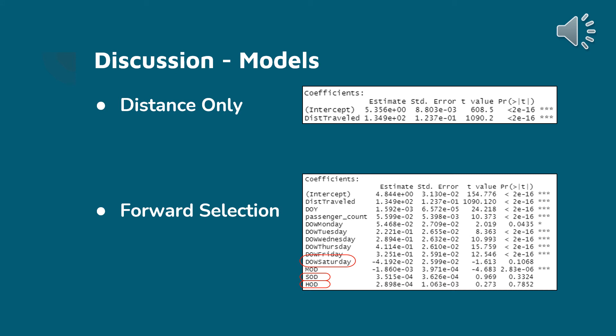Continuing discussion on the models: after running the first model using only distance as the variable, we can see distance is statistically significant because the p-value is extremely low — in other words, distance affects taxi fare price. After completing forward selection, we can see which variables are statistically significant and affect cab fare. Variables circled are not statistically significant using 0.05 as a cutoff probability, meaning we cannot say if those variables affect fare.